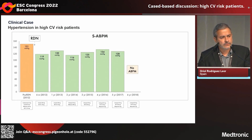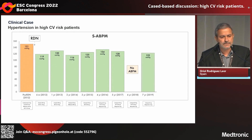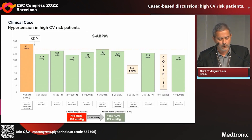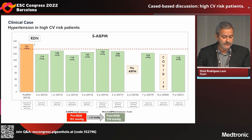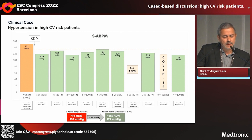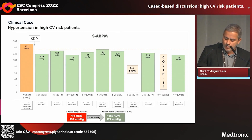In 2018 the patient didn't come to our clinic, but he was back in 2019. We saw that this improvement was maintained over nine years of follow-up. Prior to renal denervation the mean systolic blood pressure was 151 mmHg, and the mean over the nine-year follow-up was below 125 mmHg.